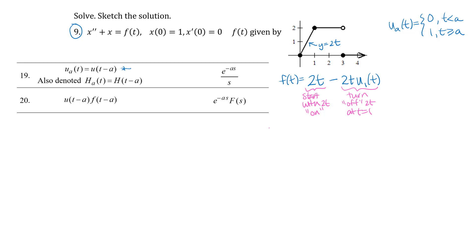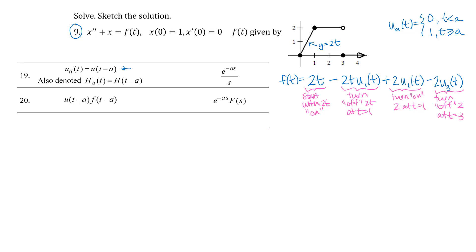Then I want to turn on another function at t = 1. I add the function I want to turn on times the unit step function at t = 1. I want that function to stay on until t = 3, and then everything to be off, so I subtract that function times the unit step function initiating at t = 3. You can verify by thinking through the 0s and 1s that these unit step functions output on different intervals of t that you get the graph shown above.